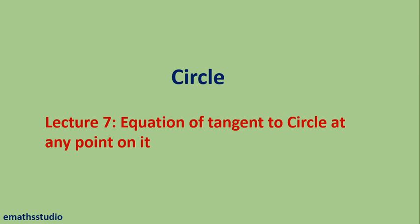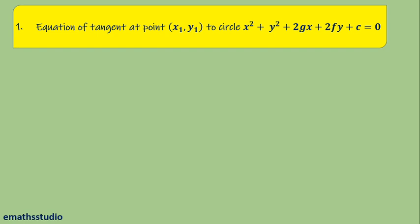Hello students, this is lecture number 7 for the circle, and in this lecture we are going to discuss the equation of tangent to the circle at any point on it. Here I am considering the equation of tangent at point (x1, y1) to the circle x² + y² + 2gx + 2fy + c = 0. This is considered as the general circle.